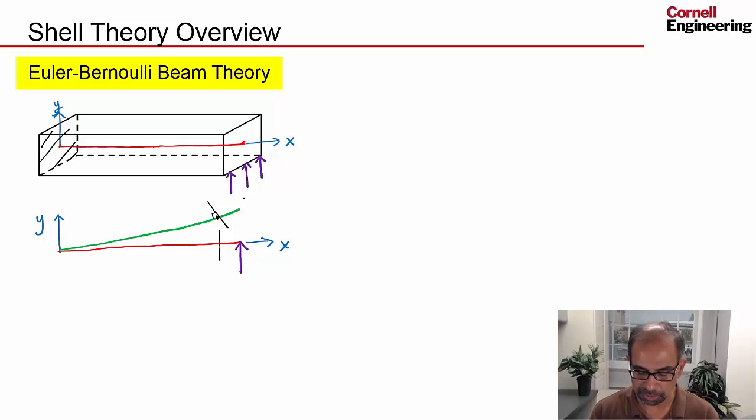You say plane sections remain plane, usually, that's how you couch it. Then you say for small deformations that the rotation angle of the cross-section is just given by the slope of this curve. Once I know the deformation of the midline as well as the slope, then I can back calculate where that point moves.